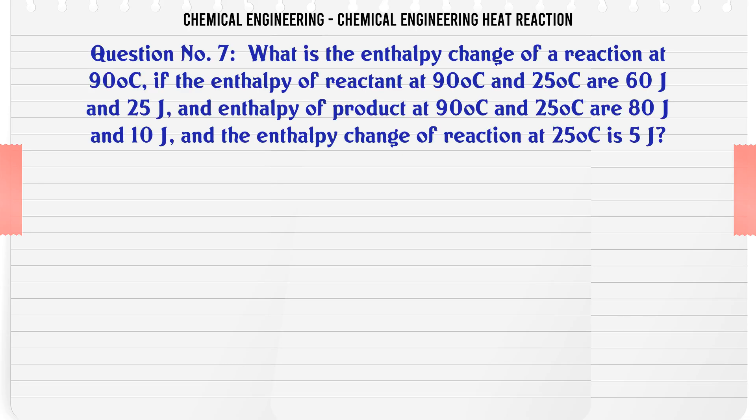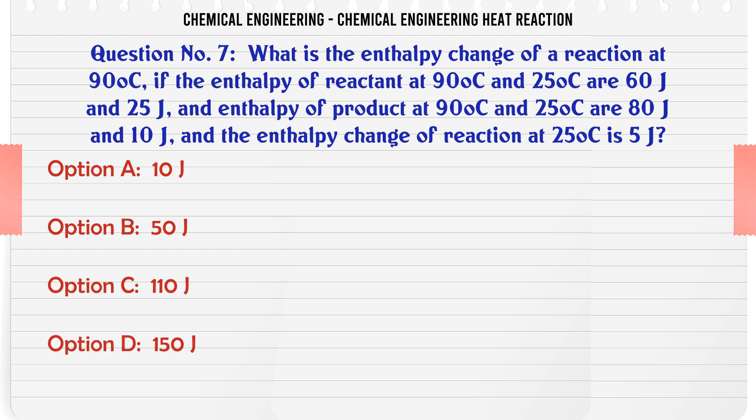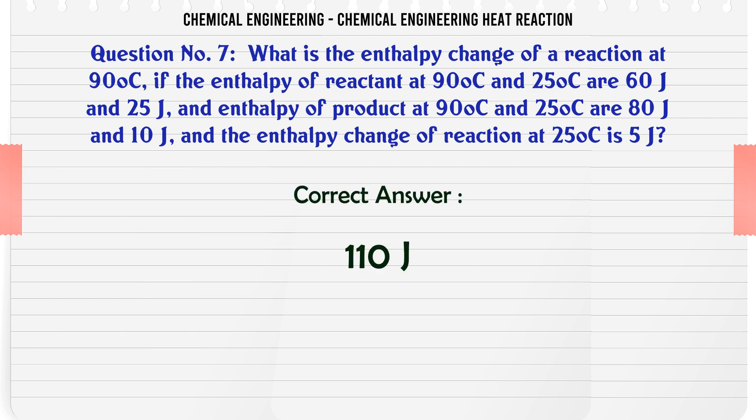What is the enthalpy change of a reaction at 90°C if the enthalpy of reactant at 90°C and 25°C are 60J and 25J, enthalpy of product at 90°C and 25°C are 80J and 10J, and the enthalpy change of reaction at 25°C is 5J? A: 10J, B: 50J, C: 100J, D: 150J. The correct answer is 100J.